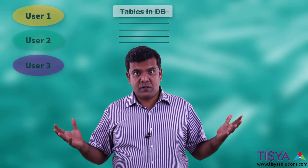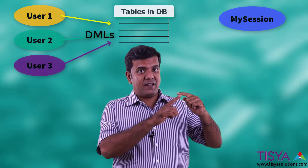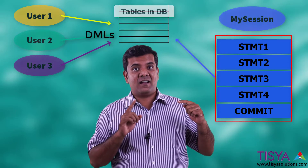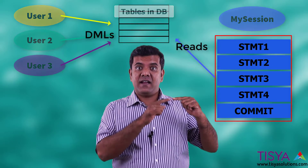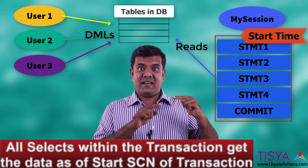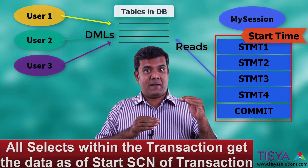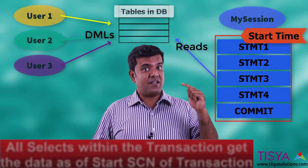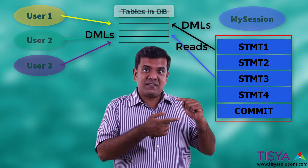The next level of isolation is serializable isolation. Here, there could be multiple users constantly manipulating rows, but as a single user I want my transaction to see only the changes that I make and not the changes made by other users. Under such circumstances, any read I do within this transaction — any SELECT — will get the data as of the time the transaction started, irrespective of what other users are doing with the same data, whether they commit or not.